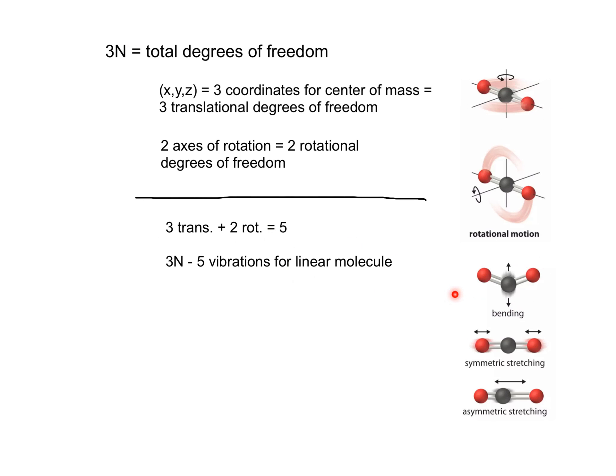Since CO2 also has three atoms, we expect three N is nine minus five equals four vibrations for the molecule. There is one symmetric stretching mode, two asymmetric stretching modes, and a bending mode shown here. This bending mode is doubly degenerate, so there are two bending modes that occur in different directions. The one shown here has the oxygen atoms moving in the ZY plane, but the oxygen atoms can also move out of the plane and into the plane on the XY plane. Those two different bending motions have exactly the same amount of energy and are therefore degenerate.